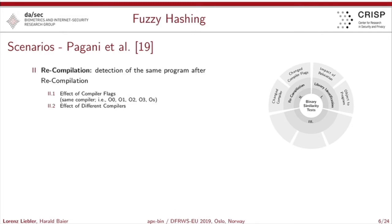The second scenario is the task of recompilation: you take a program and recompile it with different compiler flags, or in another scenario, recompile it with a different compiler entirely.